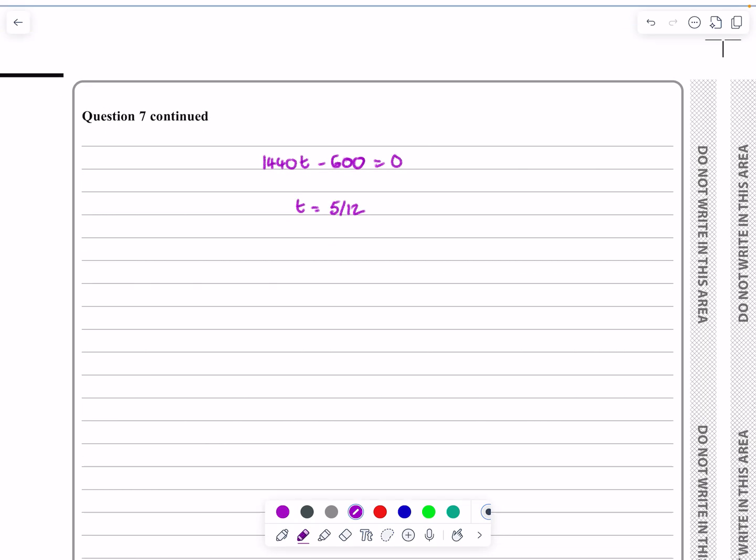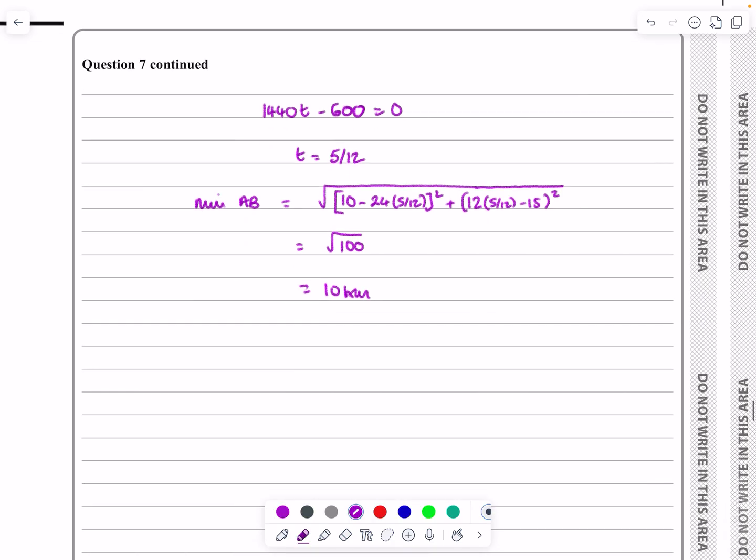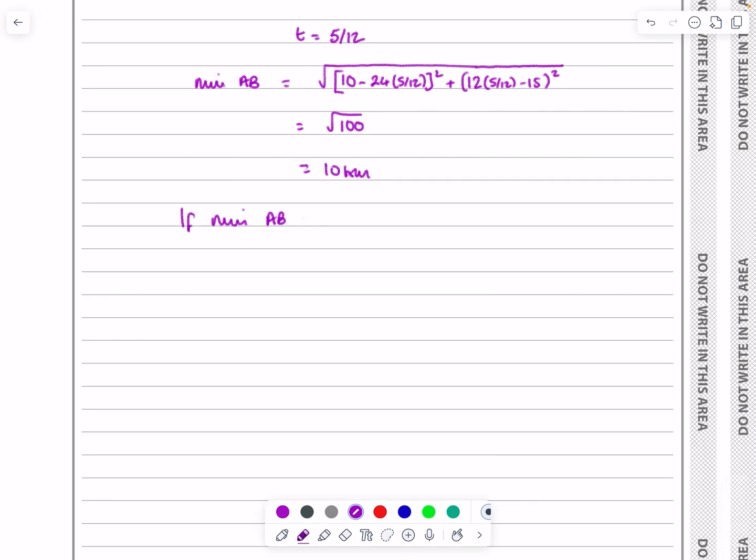Minimum AB is going to be the square root of (10 minus 24T)² plus (12T minus 15)². Putting in 5 over 12 for T, if you plug all that in, it works out to be root 100, which is really nice. So the minimum distance is 10 kilometres. Let's make that clear to the examiner: If minimum AB is 10 kilometres, then they do not collide.